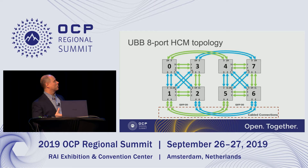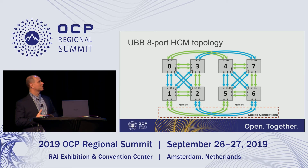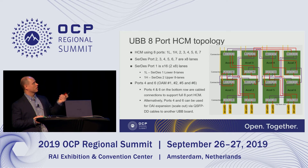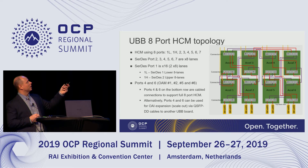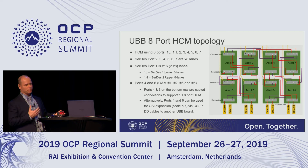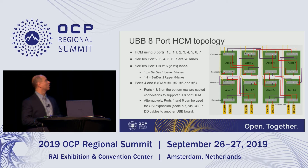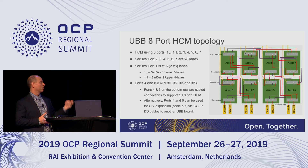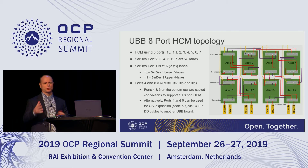We have QSFP-DD ports and cable connections between modules one and five and two and six. Looking at the detailed connectivity: ports two, three, four, five, six, and seven are x8 lane, and port one is broken up into two x8s. Ports four and six are cable connections to support the eight-port HCM, and they can also be used for scale-out to support another eight modules to get a total of 16.